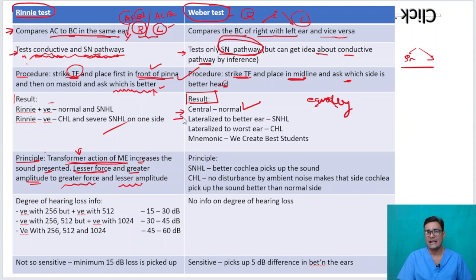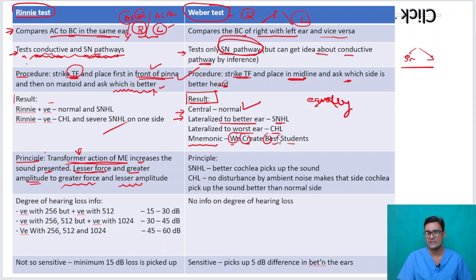If the patient says they can hear better on one side: in sensorineural hearing loss, it is lateralized to the ear with better hearing. In conductive hearing loss, it is lateralized to the ear with the worst hearing. The mnemonic is: worst ear in conductive hearing loss, better ear in sensorineural hearing loss.